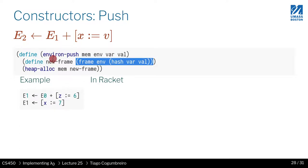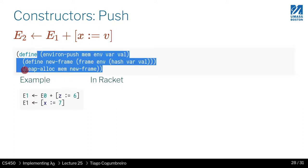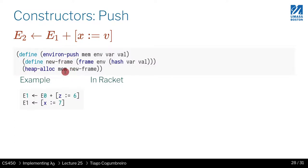The push takes a memory, the old environment (the parent environment), the key, and the value V. When implementing push, first we create a new environment—this is the same as frame push.